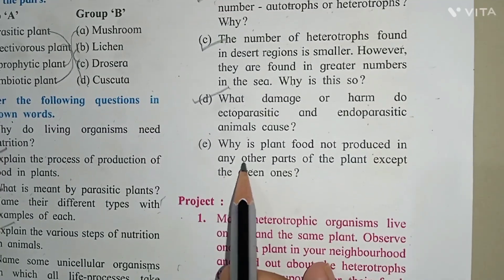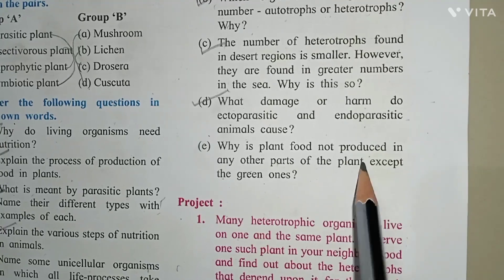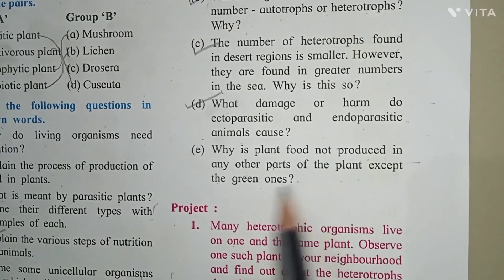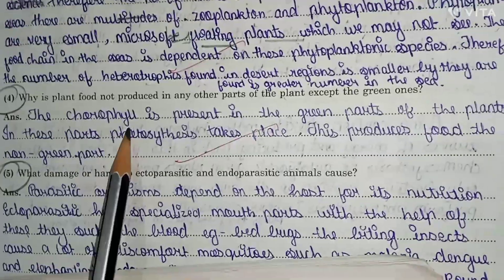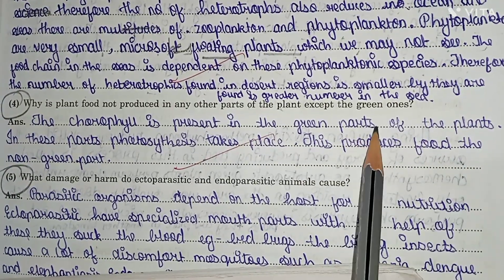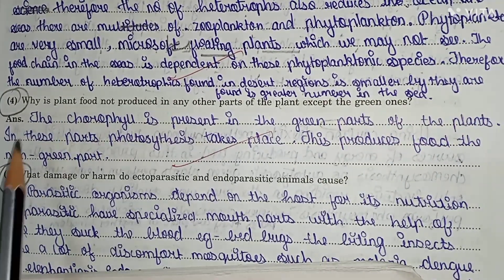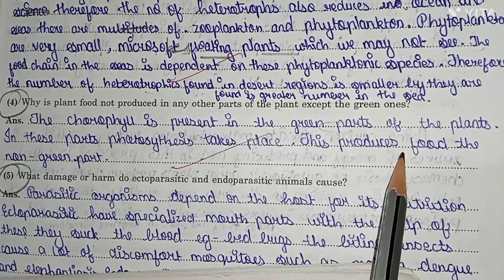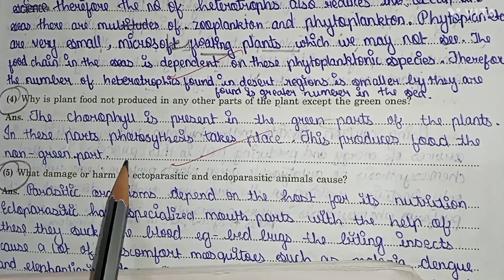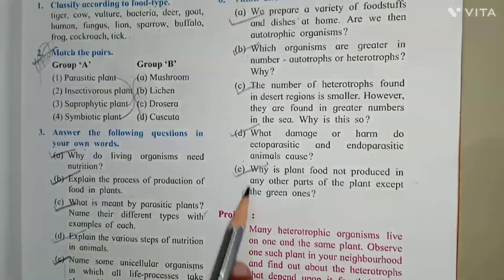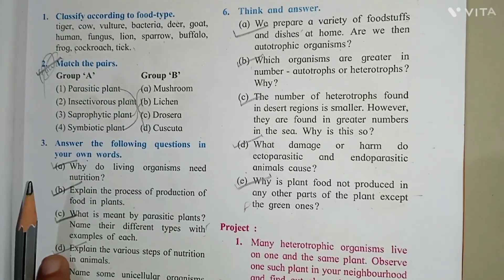Question number five: why is plant food not produced in any other parts of the plant except the green ones? Chlorophyll is present in the green parts of the plant. In these parts, photosynthesis takes place, which produces food. Non-green parts do not have chlorophyll, so they cannot perform photosynthesis. Question number five is completed.